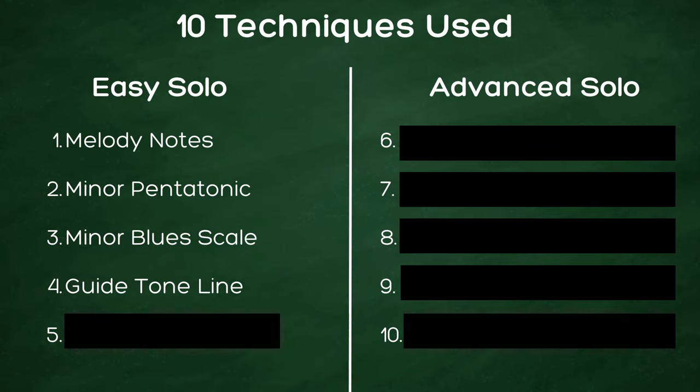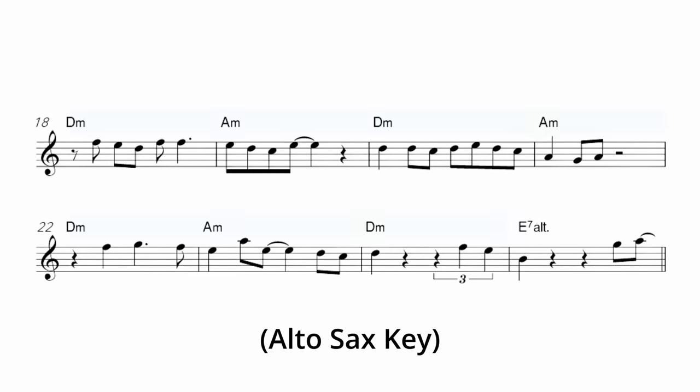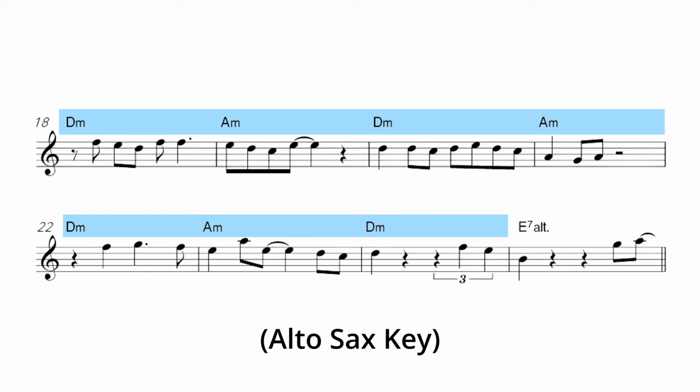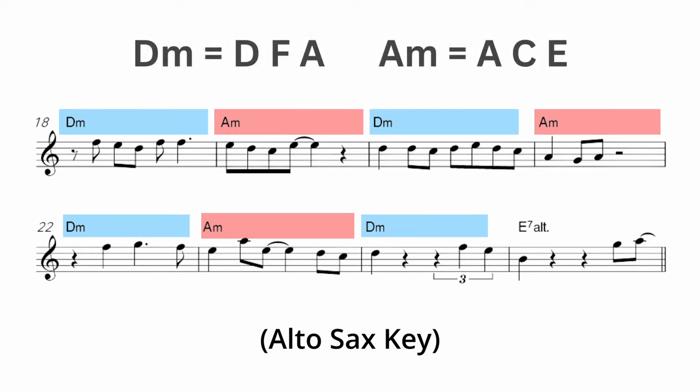Moving on to our fourth technique, it's a little bit more advanced. It's known as guide tone lines. We use this technique as we enter into the B section, where we're now breaking away from that two-chord vamp and we have one measure of chord four moving to one measure of chord one. For these guide tone lines it's useful to know the chord tones — essentially what we're doing is finding a smooth pathway from measure to measure as the chords change.